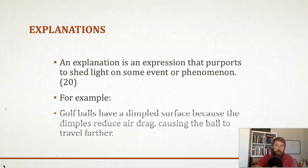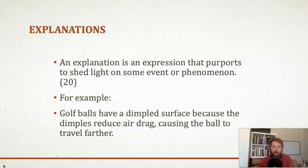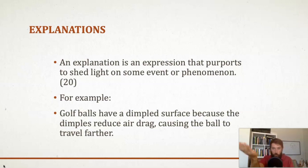'Golf balls have a dimpled surface because dimples reduce air drag, causing the ball to travel farther.' This one is not an argument. One way to see that is because we're not trying to prove that golf balls have a dimpled surface — all we're doing is explaining why they have a dimpled surface. Think about what kind of evidence someone would need to prove a golf ball has a dimpled surface — they'd probably just hold up a golf ball and say 'look.' So it's not the right kind of evidence to convince you of that. Explanations often start from something we already know to be true and then explain why.